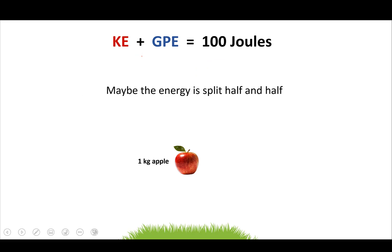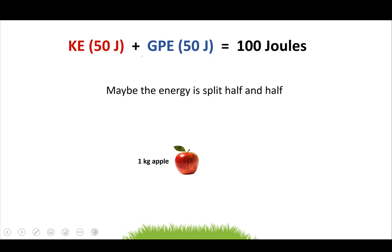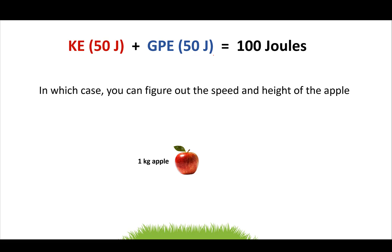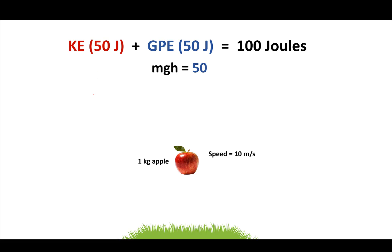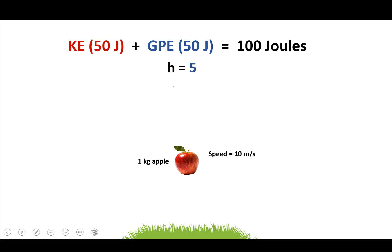For example, maybe the energy is split half and half: 50 joules of kinetic energy and 50 joules of gravitational energy. In this case, you can figure out the speed and height of the apple. Kinetic energy equals one-half mv squared, so if you know this number and the mass, you can find the velocity with algebra. Similarly, you can figure out the height from the gravitational potential energy. Plugging in the numbers — using g equals 10 — you find the apple is moving at 10 meters per second and is 5 meters above the ground.